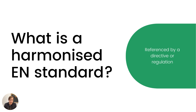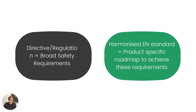A harmonized EN standard means it is referenced by a directive or regulation such as the Toy Safety Directive. Directives and regulations give broad requirements, whereas harmonized EN standards give a product-specific roadmap to achieve those requirements. This applies beyond toys — for example, how do you safely design an AC adapter, a phone charger, or a lithium-battery-powered device? When engineers at companies like Samsung or Apple design a new product, they must look at the EN standards and ensure the product is designed accordingly. Broad regulatory requirements alone are not sufficient.